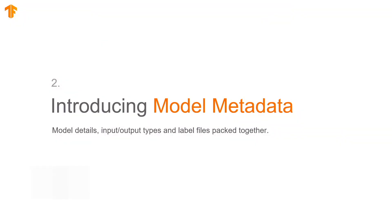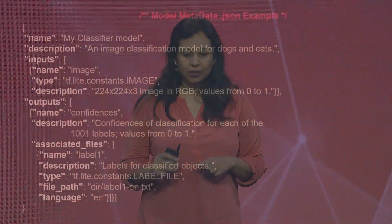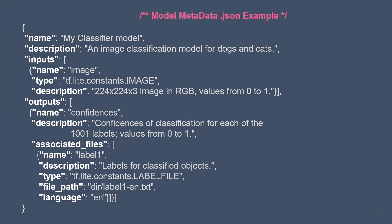Next up, we are introducing model metadata. Model authors can now provide a metadata spec when they are creating and converting models. This makes it easier for users of the model to understand what the model does and to use it in production. The metadata descriptor provides additional information about what the model does, the expected format of the inputs, and what is the meaning of the outputs.